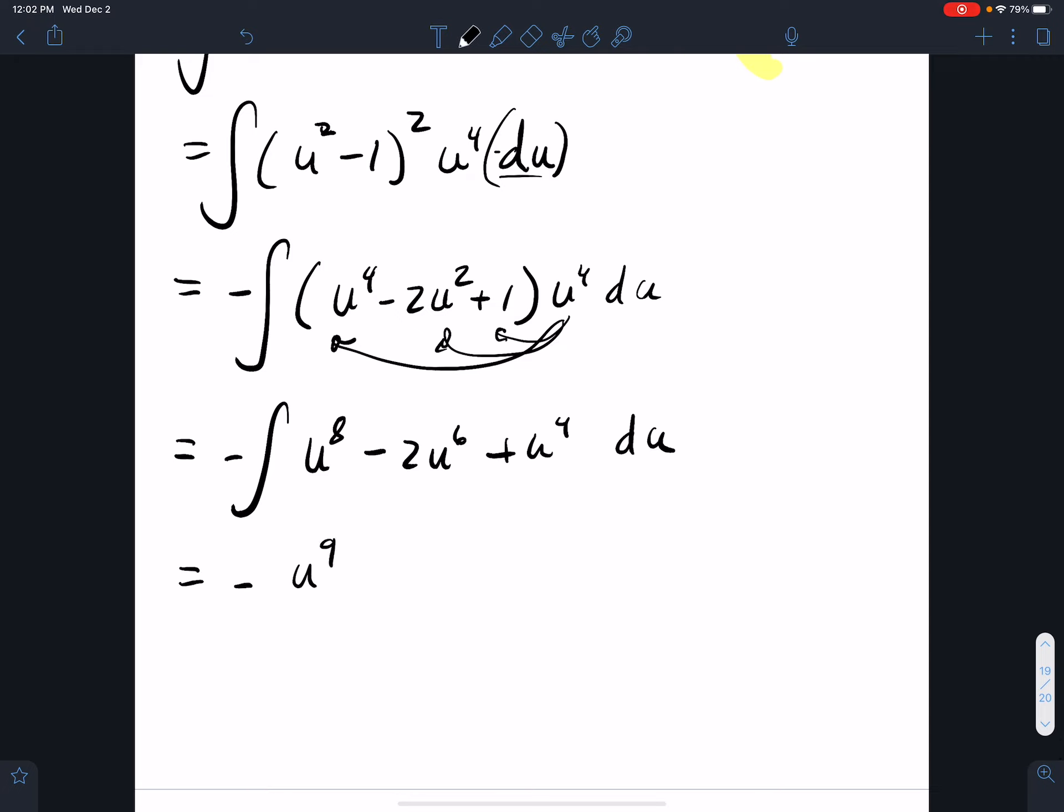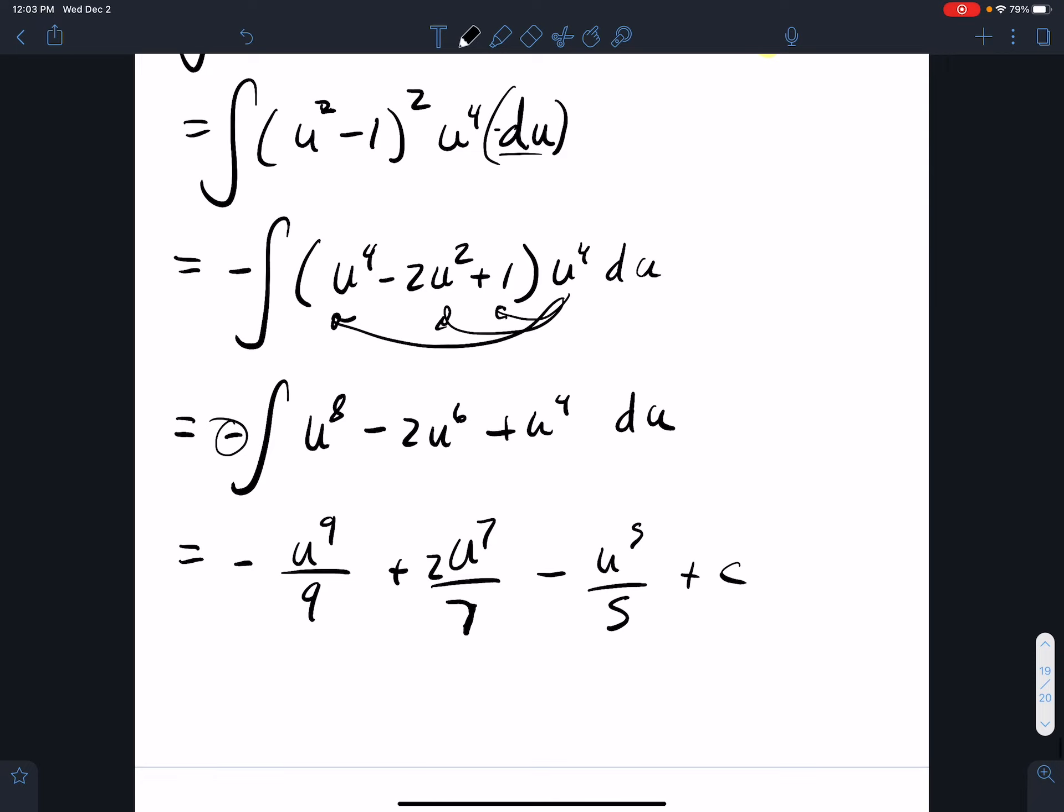I get u to the ninth over nine and u to the seventh over seven and u to the fifth over five. Count for your constants and your negative multiplier going on there, so that would be negative.